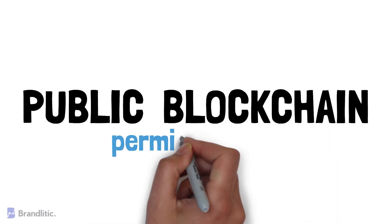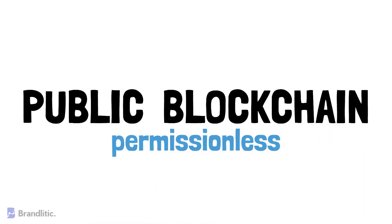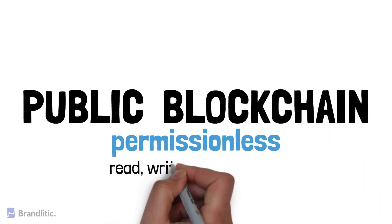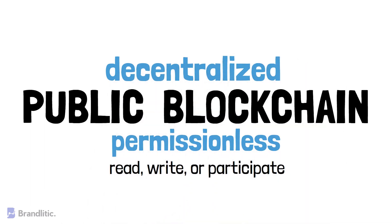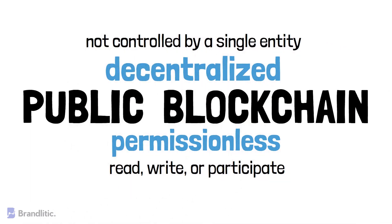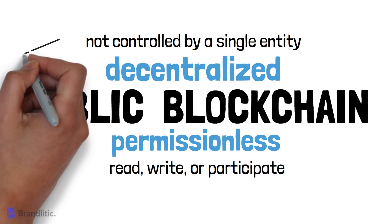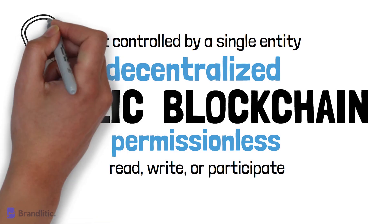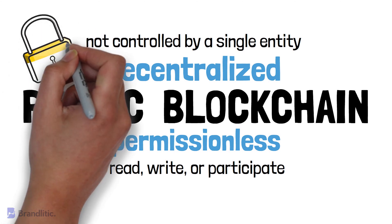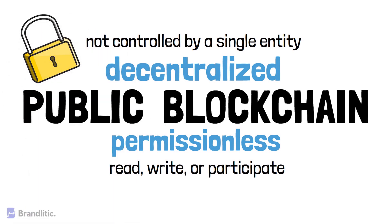First, the basics. A public blockchain is permissionless — that is, anyone can join the network and read, write, or participate within the blockchain. A public blockchain is also decentralized, and that's why it does not have a single entity which controls the complete network. Data stored in a public blockchain is secure, as it is not possible to modify or alter data once they have been validated on the blockchain.